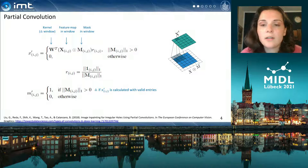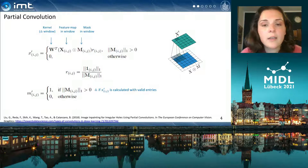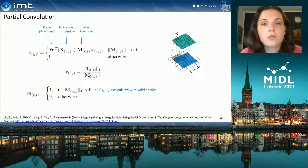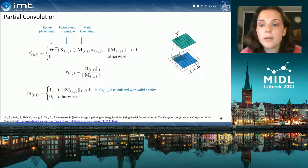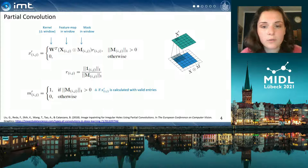Additionally, the convolution result is adjusted by the parameter r that depends on how many entries in the convolution were valid. Also, the mask is updated by the same condition as the convolution.